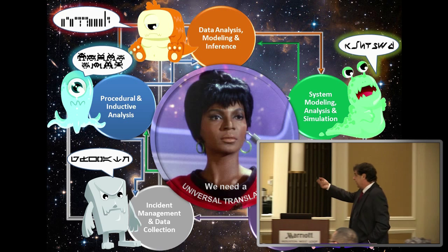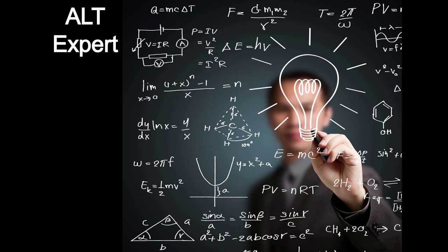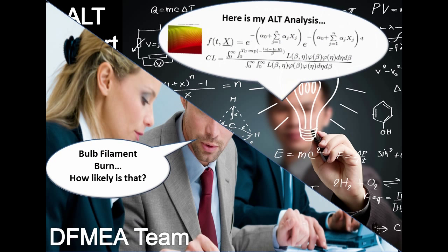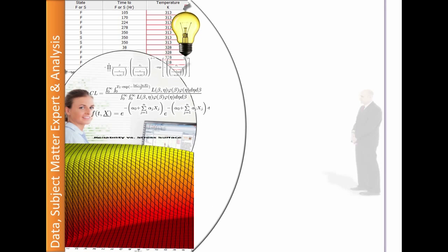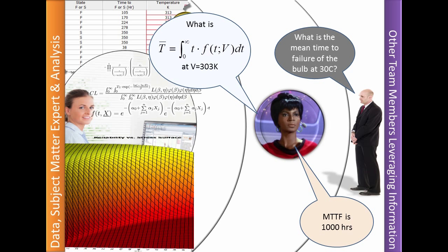How do I make everybody an expert on every activity so they can leverage that information? That's the challenge. In the absence of that, you need some kind of a referee or a universal translator sitting in the middle to provide that information in a way that is useful to somebody. As an example, let's say I've got an ALT expert who did an accelerated test on a specific failure mode on a bulb. Now I've got the FMEA team over here that doesn't know how to spell accelerated testing — they've got a filament burn on their bulb, and instead of guessing at an occurrence rating of one through five, I want to use a real number. That's one of the challenges you start getting into with the how.